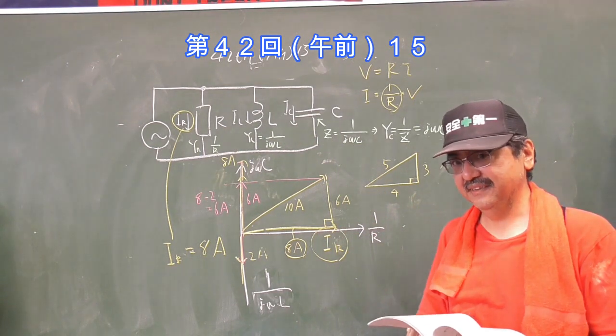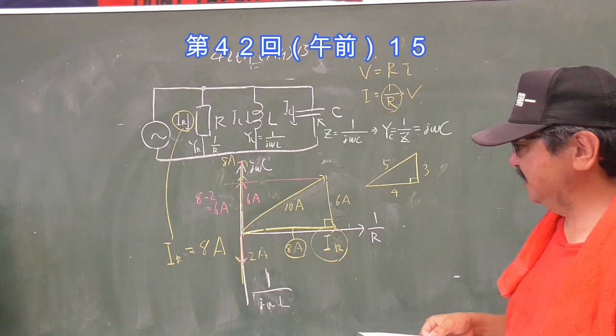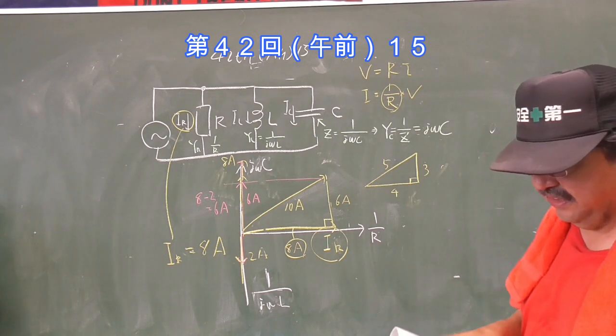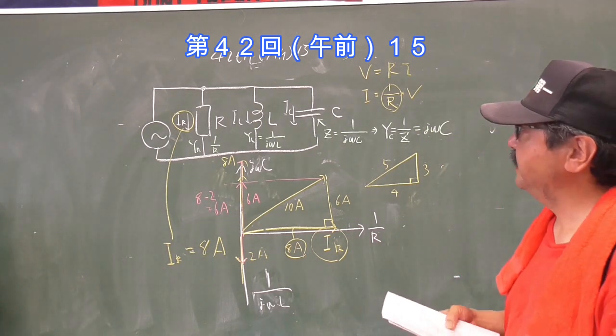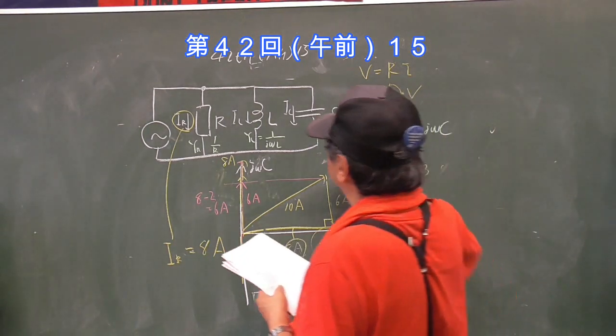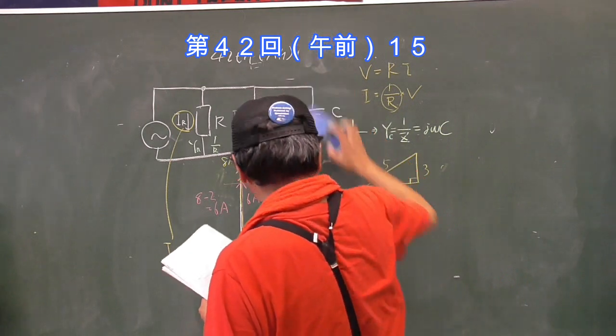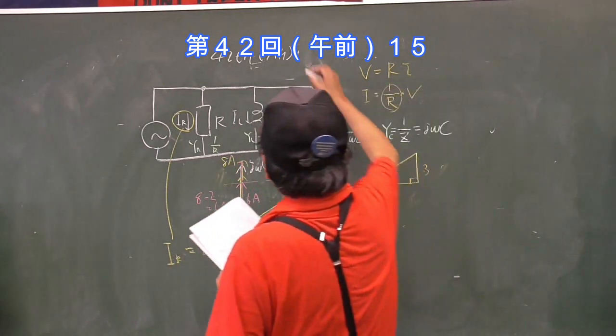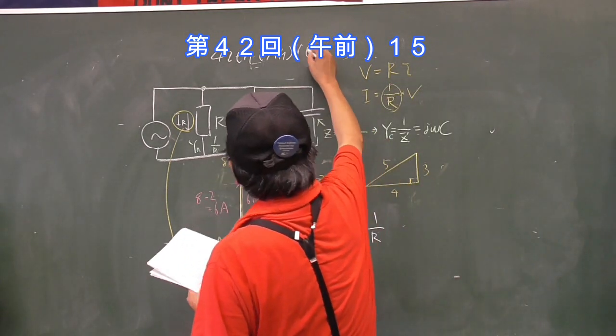直列回路の場合は電圧でこういうことができます。で、同じように並列回路の場合は電流でこういう風にやっていいわけですね。なぜかというとそれぞれに流れる電流の足し算が全体の電流になるからです。では次、問題の16番を見てください。